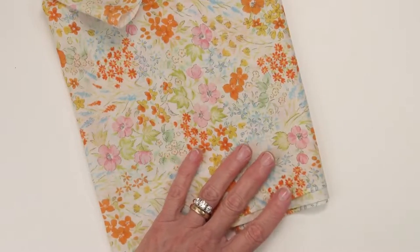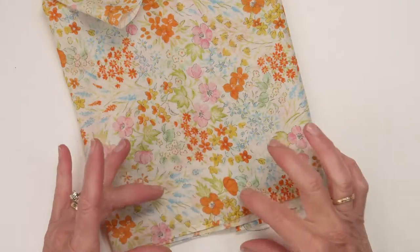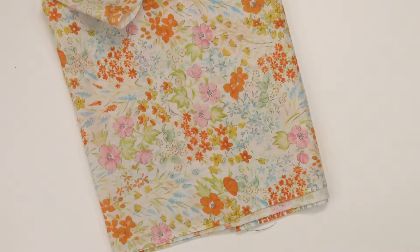While your fabric is out on the cutting mat cut a strip that is one inch by about thirty inches long. That strip is what you'll use to make the tie.